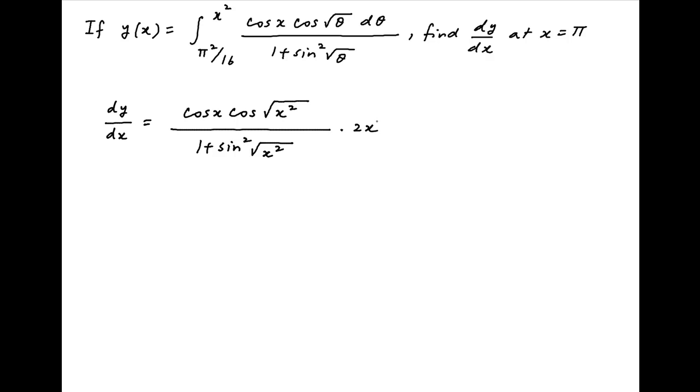This times the derivative with respect to x of the upper limit which is 2x. This simplifies to 2x times cos x times cos x divided by 1 plus sine squared x and this is equal to 2x cos squared x divided by 1 plus sine squared x.